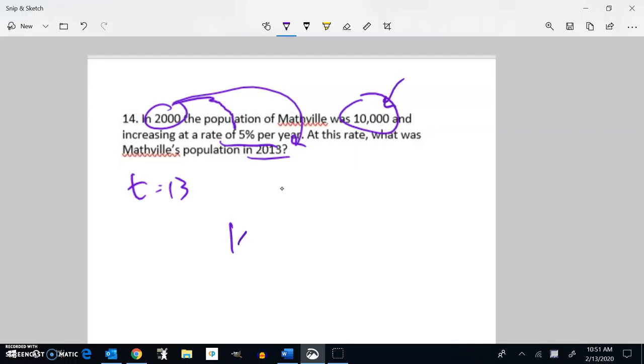I have my initial population, so I started at 10,000, and now it's increasing at a rate of 5% per year. So 100% would mean no change, like it's staying at what it's at, but it's changing by 5%, increasing by 5%. So that would be 105%, which means my multiplier is 1.05.